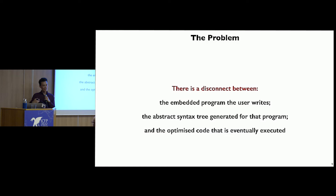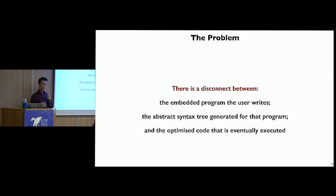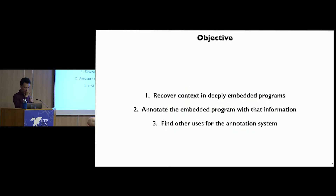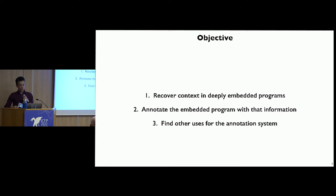So this is the problem: there's a disconnect between the embedded program that the user is writing and the thing that's ultimately executed. With deeply embedded languages, what you're actually doing is writing a Haskell program that at program runtime will generate some kind of abstract syntax tree, then at runtime compile that into something and run it. There's a disconnect between those two things — this is the gap we're going to try and close. We want to recover some kind of context here — recover that context, annotate our generated AST with the information, and find other uses for that annotation system once we have it.